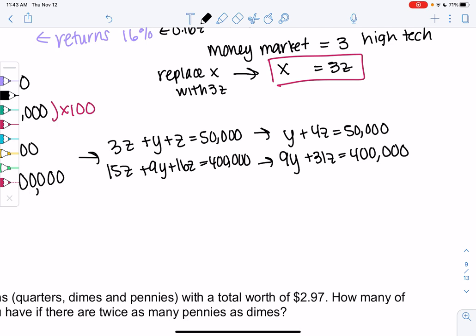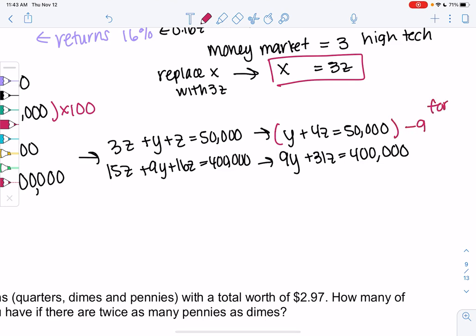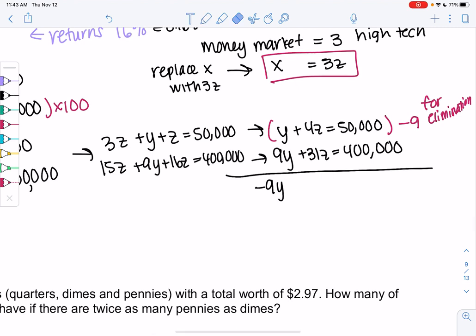And then we'll just do elimination. I thought this was easier to do elimination with two variables than three. So I'm going to multiply the first equation by negative 9 to do elimination. And then we're almost done. Negative 9Y minus 36Z, and then we get negative 450,000.